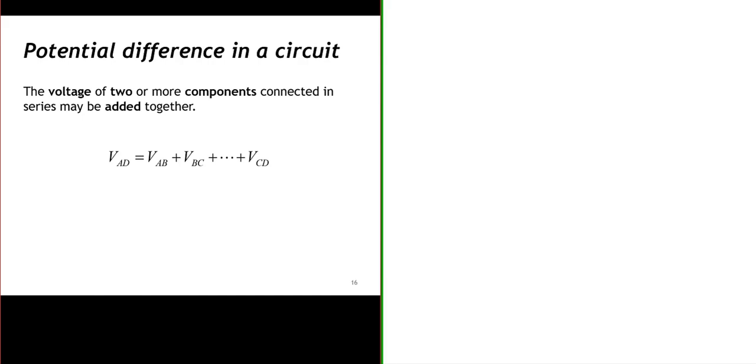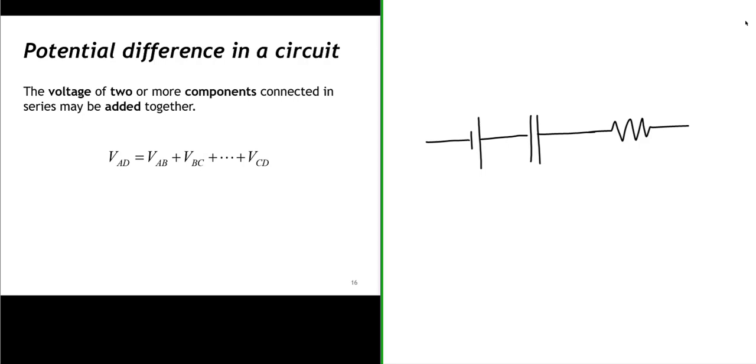Let's talk about the potential difference of two or more components connected in series in a circuit. Let's look at several components connected in series — a battery in series with a capacitor, in series with a resistor. And let's look at points in between and on either side of each component.